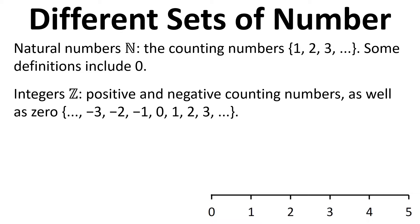We also have integers. These are the positive and negative counting numbers, as well as 0. We can extend our number line into the negative numbers.